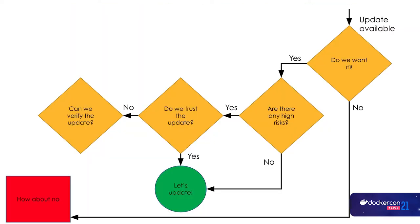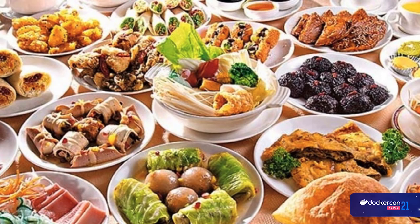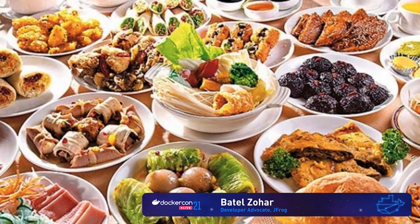This is why we stopped trusting vendors. And this is where the problem lies — when we don't trust the vendor, we have to verify, and that can take a lot of time. Sometimes it's not really worth it. If this verification takes longer than the next release cycle, what do we do? It's just time-consuming and we need to upgrade again. So vendors are pressured to add more and more features so we'll want those updates.